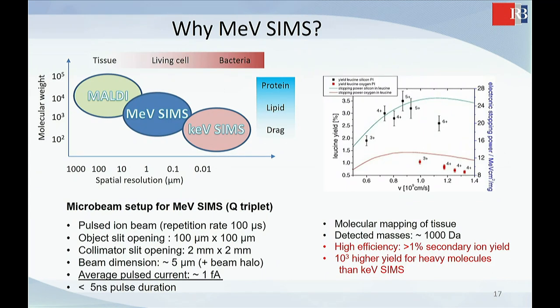Another thing which is very important, that when you're looking at the capabilities of MeV SIMS, in terms of analysis of the masses, it is quite well positioned for ions between, let's say, 100 and 1,000, maybe a few more thousand.